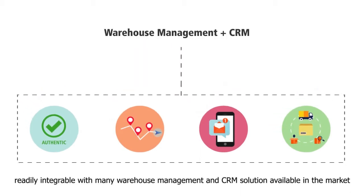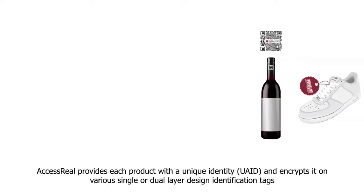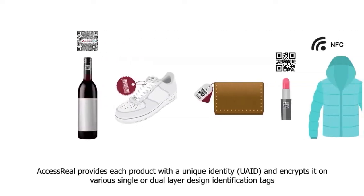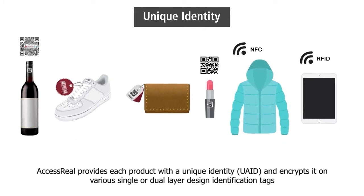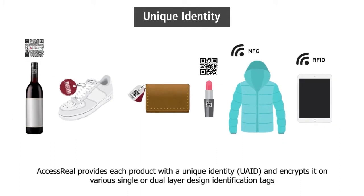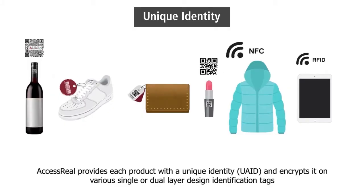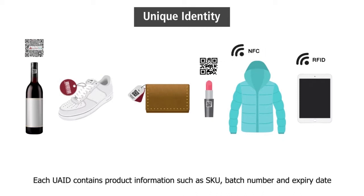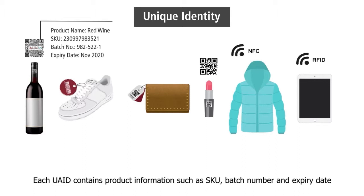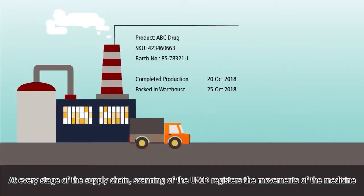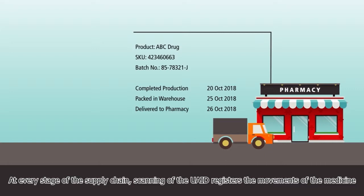How does it work? AccessReal provides each product with a unique identity — a UA ID — and encrypts it on various single or dual layer design identification tags. Each UA ID contains product information such as SKU, batch number, and expiry date.